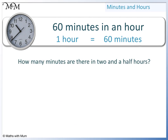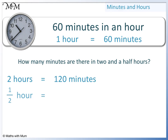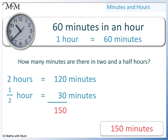How many minutes are there in 2 and a half hours? We know that 1 hour equals 60 minutes, and so 2 hours is double that, which is 120 minutes. Half an hour is half of 60 minutes, which equals 30 minutes. To find out how many minutes we have altogether, we add 120 and 30. This equals 150, so there are 150 minutes in 2 and a half hours.